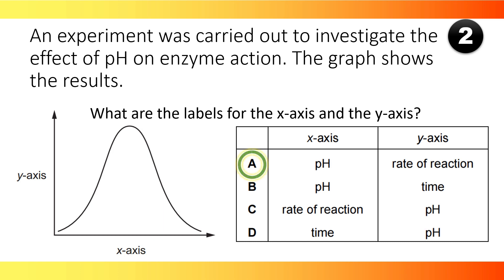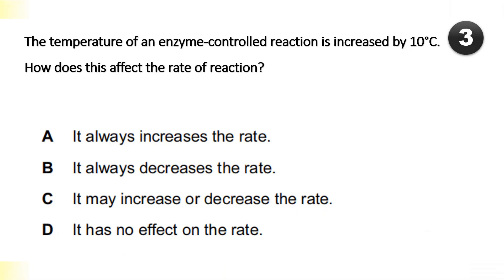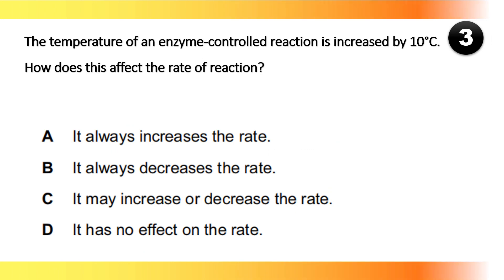The temperature of an enzyme-controlled reaction is increased by 10 degrees Celsius. How does this affect the rate of reaction? It may increase or decrease the rate.